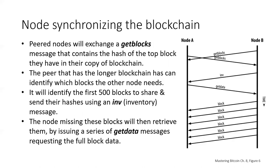Here, for example, node A and node B exchange get blocks messages. Node B knows that node A is missing a bunch of blocks, so it identifies 500 blocks to share and sends an inventory message to node A. Because node B has a longer blockchain, it knows node A is missing these things, so it sends the 500 hashes. Now node A will send a get data message to retrieve those blocks, and node B will send the blocks over.